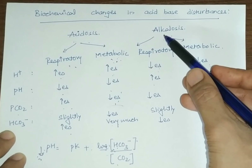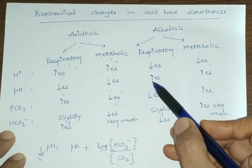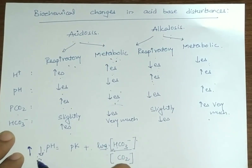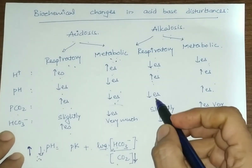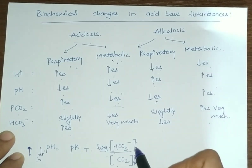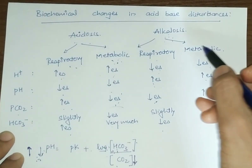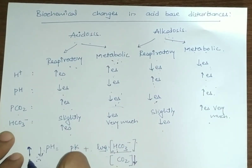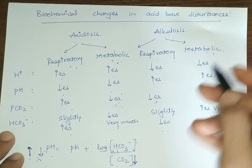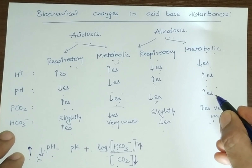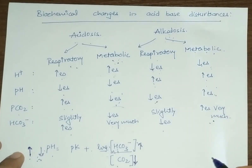In alkalosis, H+ concentration decreases and pH increases. In respiratory alkalosis, the cause is decreased CO2 concentration, and secondary compensatory mechanisms slightly decrease HCO3⁻ concentration. In metabolic alkalosis, pH increases due to an increase in HCO3⁻ concentration as the primary cause, and compensatory mechanisms also increase CO2 concentration. These are the biochemical changes and summary of acid-base disturbances.